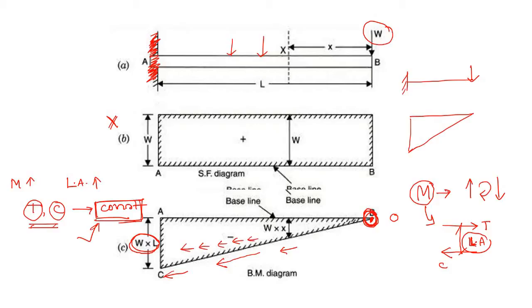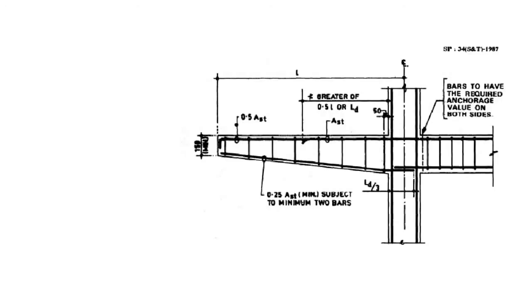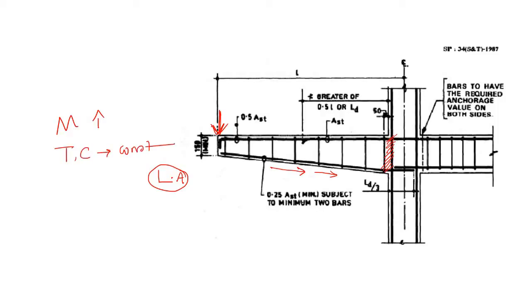That is the reason why, if you look at any cantilever beam made of concrete, you can see that the shape tapers — the free end is shallower and the fixed end is deeper. As the moment increases toward the fixed end, the depth of the lever arm increases. Initially the lever arm is small, then it grows, and at the fixed end it is at its maximum.